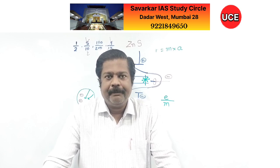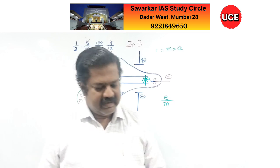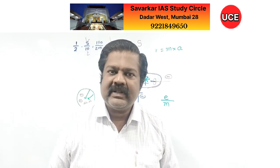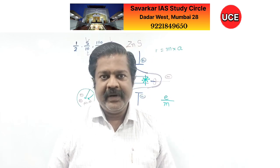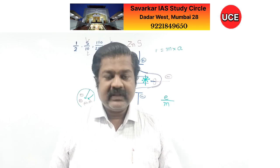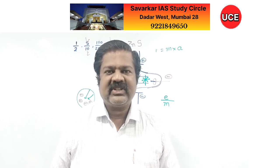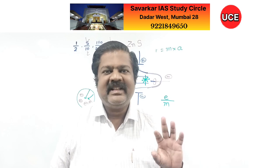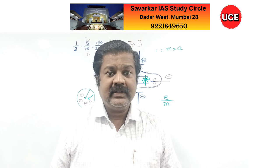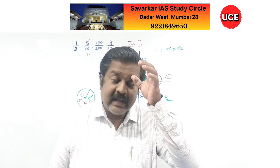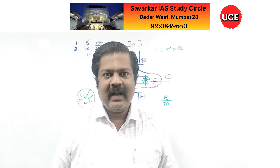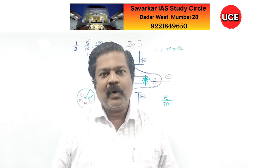Now let us talk about positive charge. Electrons, having negative charge, were discovered by Sir J.J. Thomson in the cathode ray tube experiment. Similarly, there is a scientist named Goldstein. Just as cathode rays exist, he reasoned there must be anode rays, and he started investigating them.